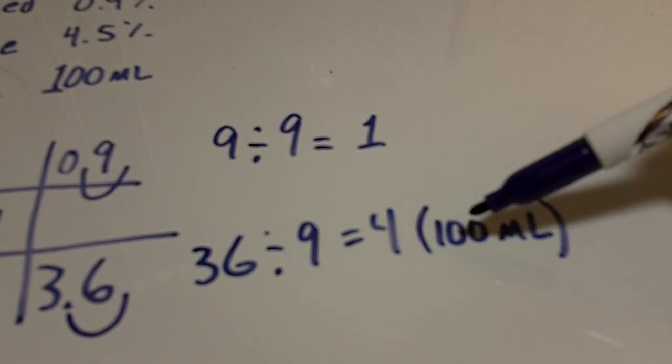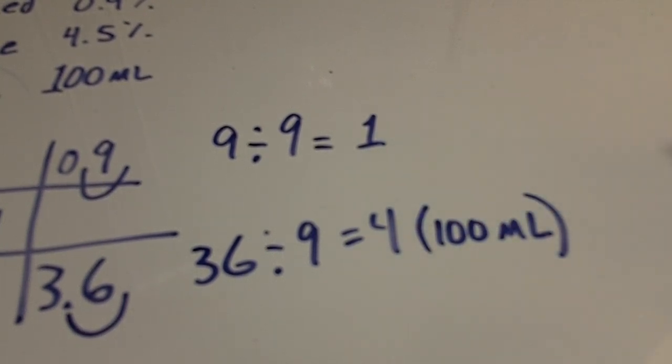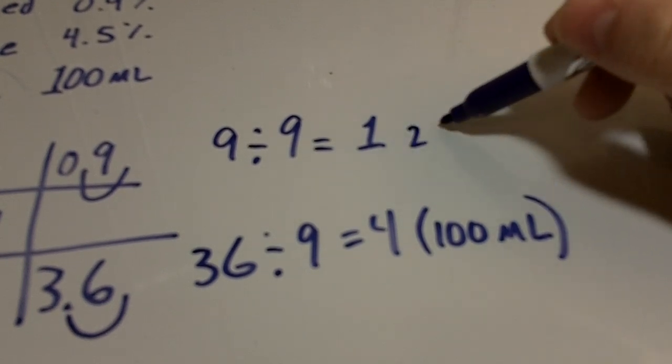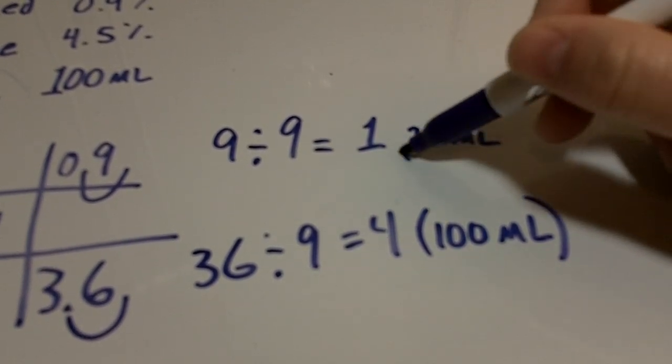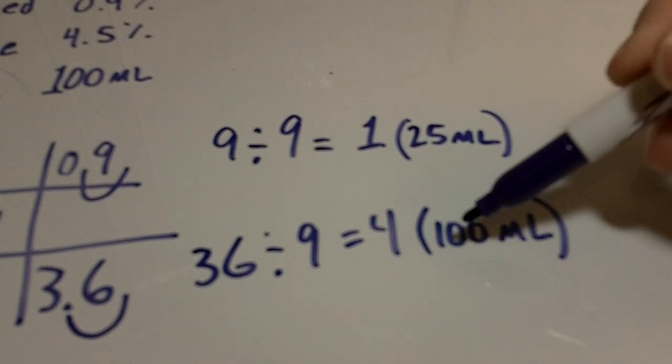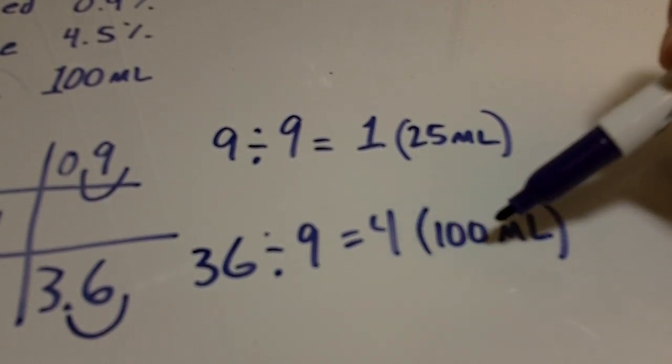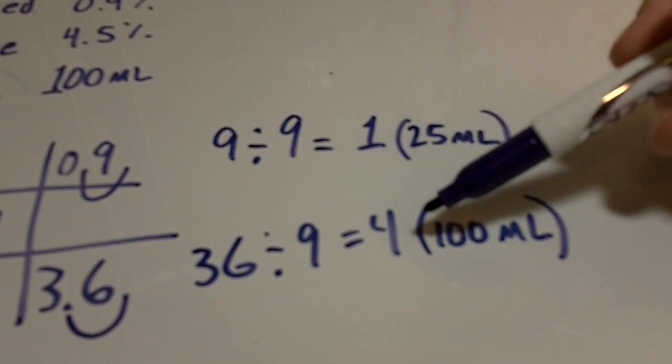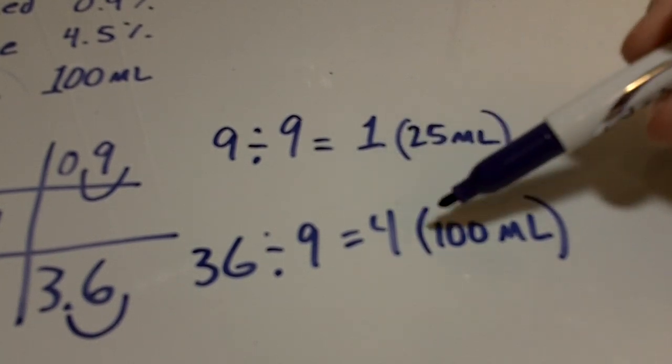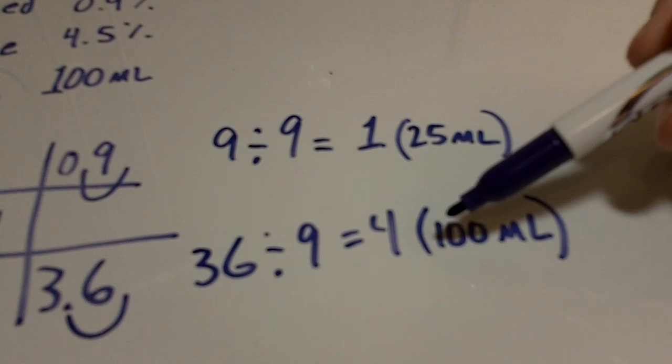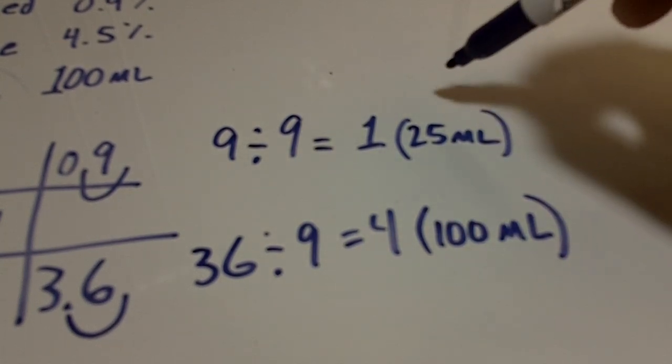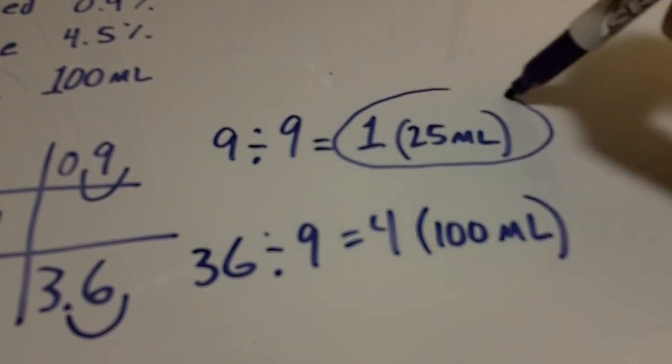Right, because 100 divided by four equals 25. And so one of those parts, the one over here, would be equal to one-fourth of these four parts, right? Okay, so that's how I would use allegation. So this would be the answer right here: 25 milliliters of the 4.5 percent.